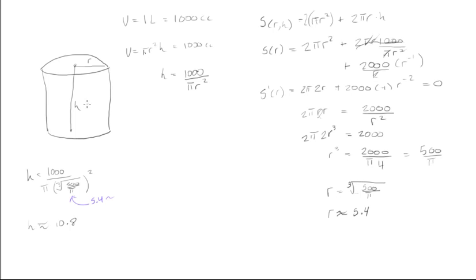With these dimensions—height roughly 10.8 cm and radius roughly 5.4 cm—we use the least amount of surface area to achieve a volume of 1000 cubic centimeters.